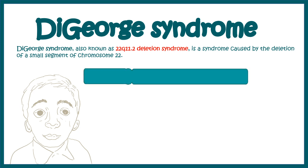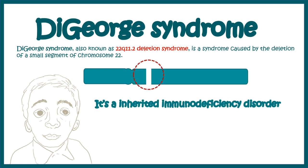In chromosome 22, a very small portion in the Q arm is deleted and the locus is known as 22q11.2. As a result of this deletion, there is DiGeorge syndrome.